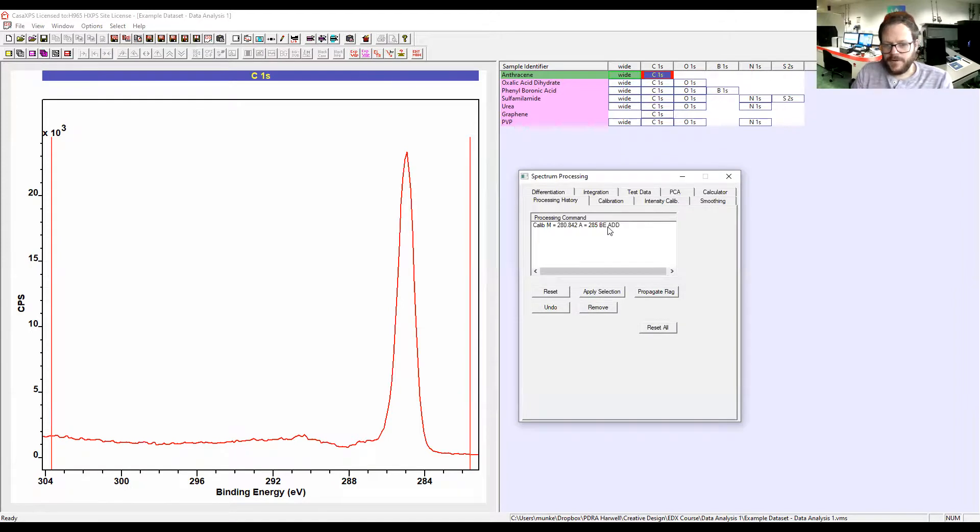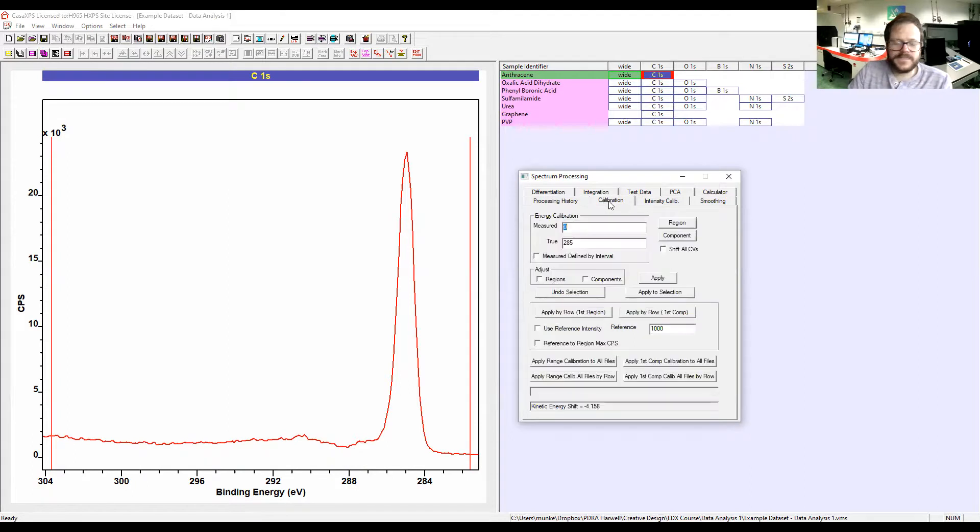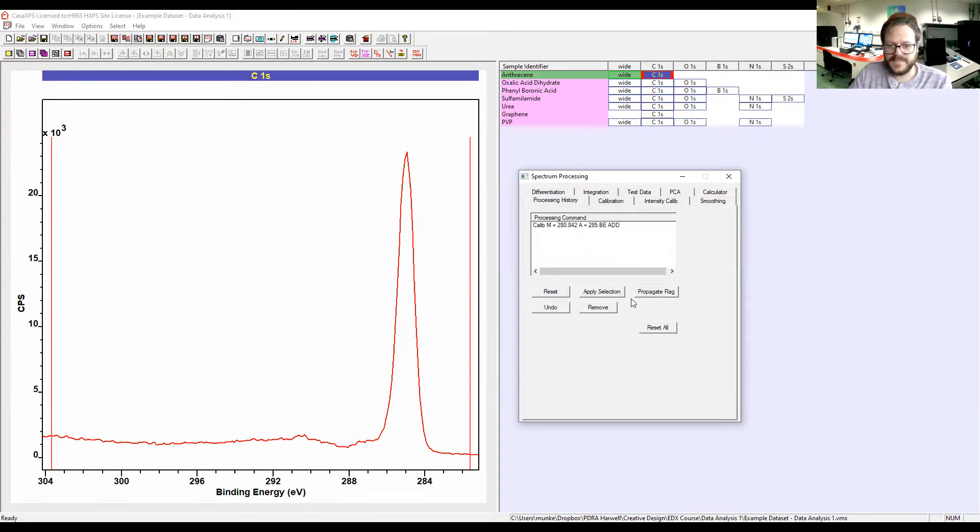Very few things are actually permanent in CasaXPS. Most of the things that you do can either be removed in their individual windows or you can come to Processing here and just reset and remove everything you've done. Don't worry too much if you're playing around with Casa. There's very few things that you can actually do to permanently disfigure your data.